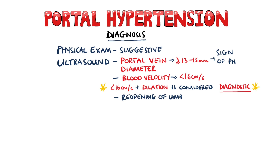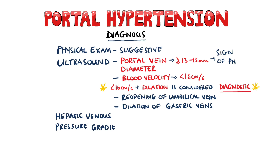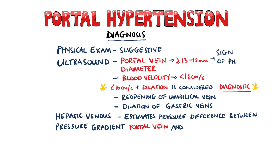Ultrasound can also show the reopening of the umbilical vein and dilation of the left and short gastric veins, which is further evidence of portal hypertension. The gold standard for assessing the severity is the hepatic venous pressure gradient, essentially an estimate of the difference between the portal vein and the inferior vena cava pressures. More than 5 is considered portal hypertension, and more than 10 is clinically significant portal hypertension, and more than 12 is a risk for variceal haemorrhage.